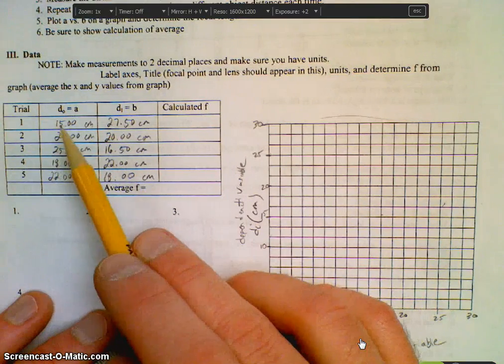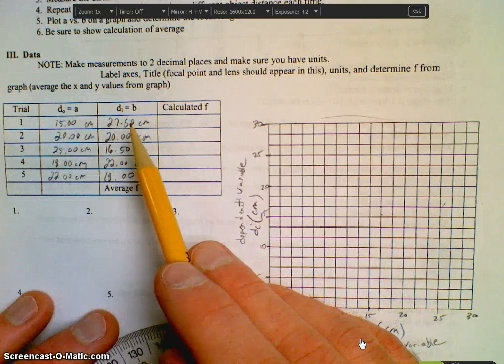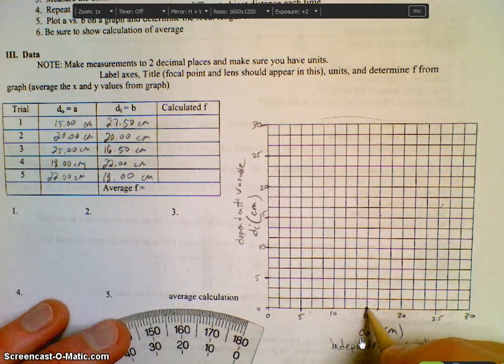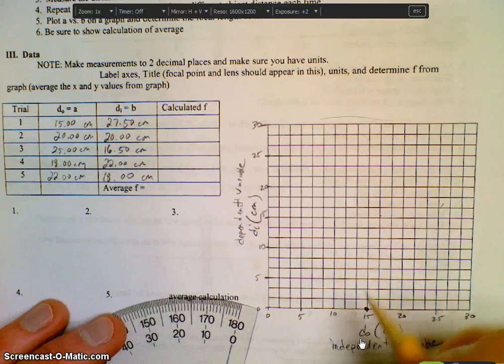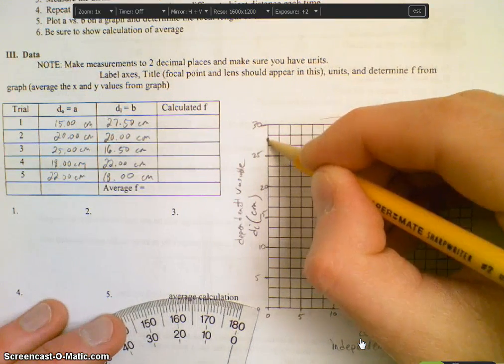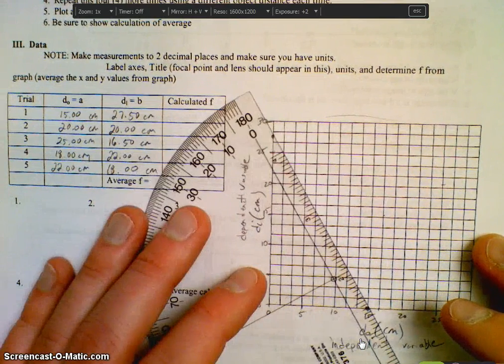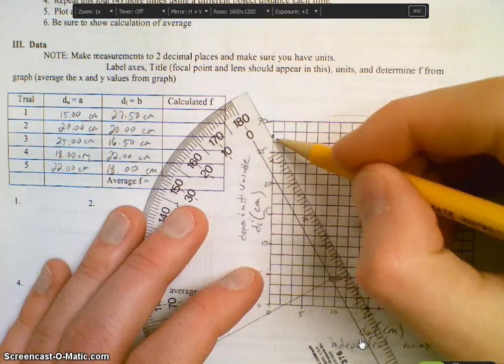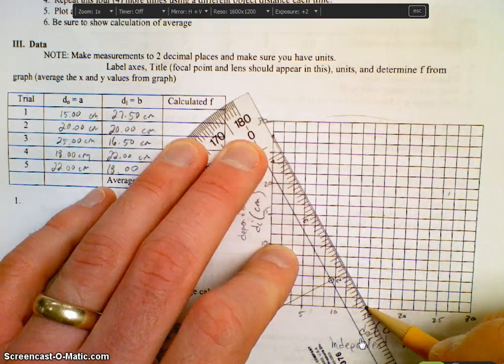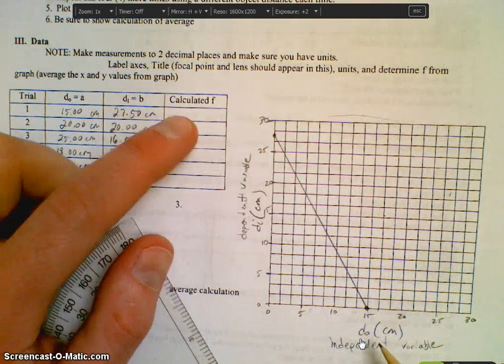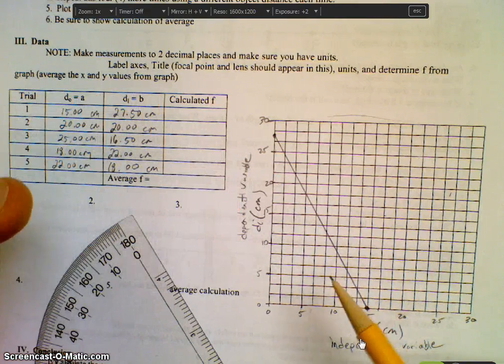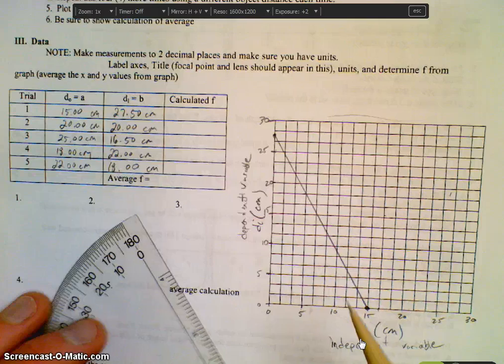All right, so let's look at the first data point. We have a DO of 15 and a DI of 27.5. So this is how we do this. DO of 15, I'm going to put a dot here, and then I'm going to put the DI of 27.5, and it's right up here in the middle of these two. And on this type of graph, we're actually going to connect these two dots then. This is a different type of graph because the relationship of these two to F is 1 over this plus 1 over this equals 1 over F.